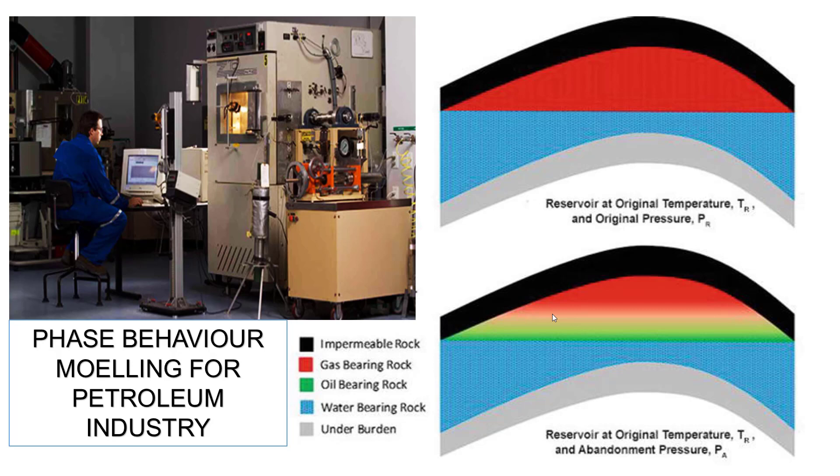A PVT study is used to evaluate the hydrocarbon in place at surface conditions. From that, we can simulate the reservoir fluid behavior during all production processes and build a production profile associated with the field development plan.